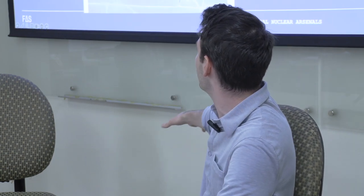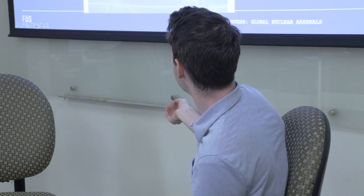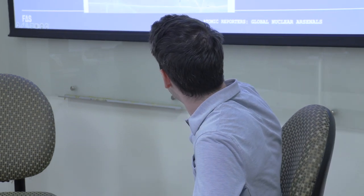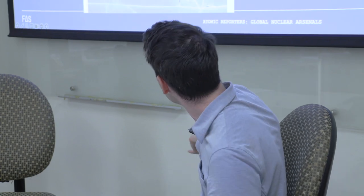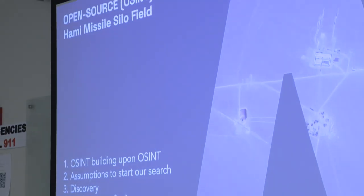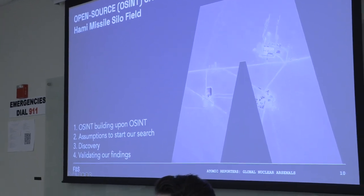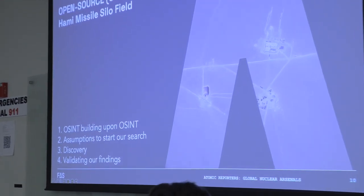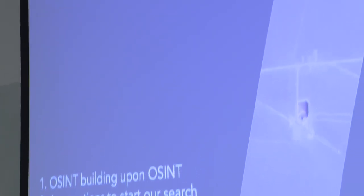Researchers have been able to track extreme minutiae — things like smoke at a factory indicating it's potentially operational, even potentially catching a missile test as it's happening. Also, being able to find big stories — like the conclusion that China is building massive missile silos in the middle of the desert. This was a disclosure I was involved in, and we'll walk through it quickly. We worked with the New York Times to publish this.